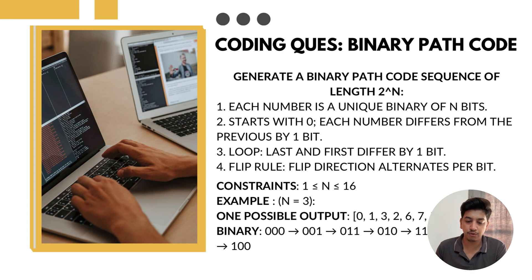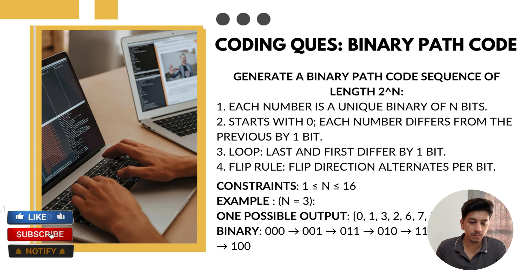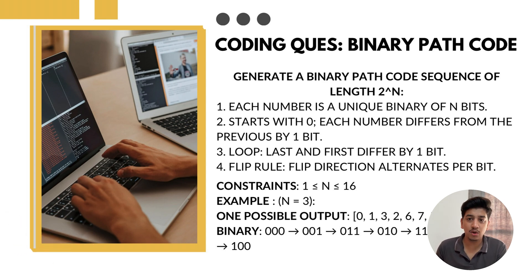A binary path code follows two layers of rules. The first is the gray code foundation: all 2^n binary numbers of length n must appear exactly once, the sequence starts with zero, each number in the sequence must differ from the previous by exactly one bit, and the last number must also differ from the first by one bit — forming a full loop.